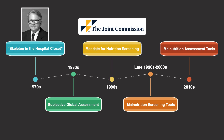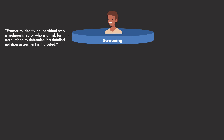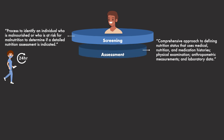All of this shows the infrastructure now in place to catch malnutrition early on. When a patient presents to the hospital, screening for malnutrition occurs right away. Screening is the process to identify an individual who is malnourished or at risk for malnutrition, to determine if a detailed nutrition assessment is indicated. Screening tools are meant to be quick and simple and are usually performed by the nursing staff in the first 24 hours of admission. Assessment is the comprehensive approach to defining nutrition status that uses medical, nutrition, and medication histories, physical examination, anthropometric measurements, and laboratory data. Compared to screening, assessment is a more in-depth process and is typically performed by a registered dietitian.